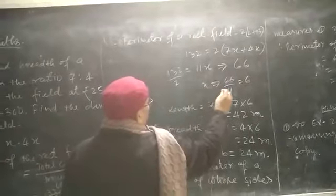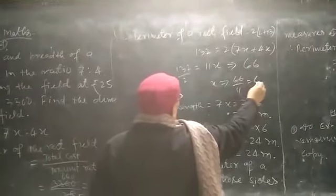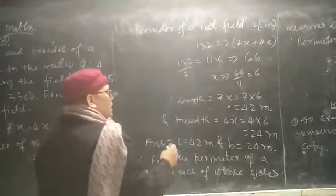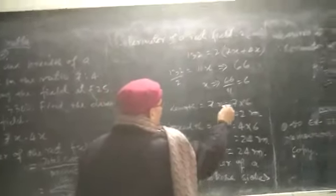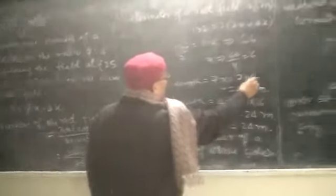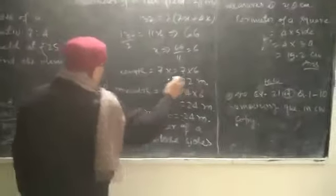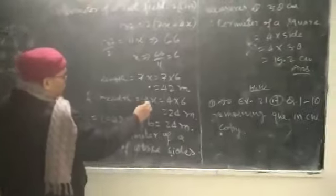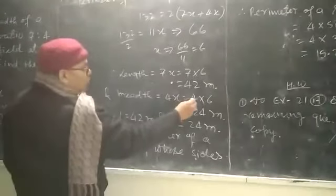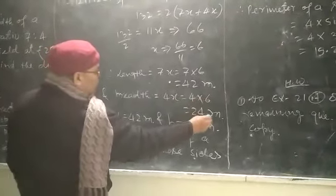Therefore, x is equal to 66 upon 11, which will be equal to 6. Putting the value of x in length, therefore 7x is equal to 7 into 6, that is 42 meters. And breadth is equal to 4x, will be equal to 4 into 6, that is 24 meters.